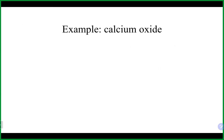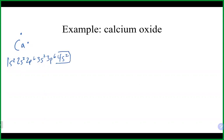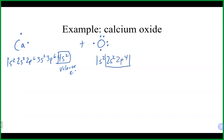Let's look at another example: calcium and oxygen. Calcium is group two, so it has two valence electrons. Its electron configuration is 1s2, 2s2, 2p6, 3s2, 3p6, 4s2 — those 4s2 electrons are the two valence electrons. Oxygen is group six with six valence electrons — electron configuration 1s2, 2s2, 2p4. We have a metal and a non-metal together, so right away we know it will be ionic, with the metal transferring electrons to the non-metal.